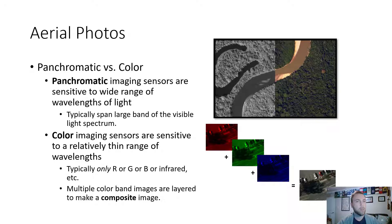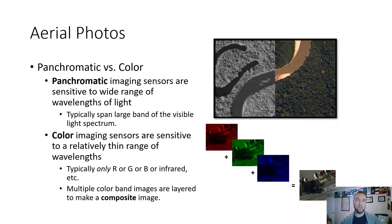Panchromatic image sensors are sensitive to a wide range of wavelengths along the electromagnetic spectrum, typically spanning large bands of the visible light spectrum with a single sensor — common for a typical camera. Color sensors, on the other hand, specialize in one single color, focusing on a very narrow segment of the electromagnetic spectrum: typically only red, green, blue, or infrared and near-infrared. Multiple color band images can be layered together in what we call a composite image.